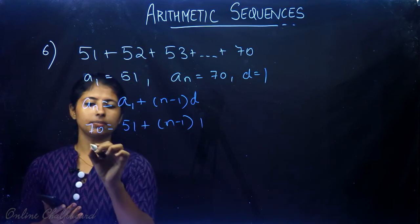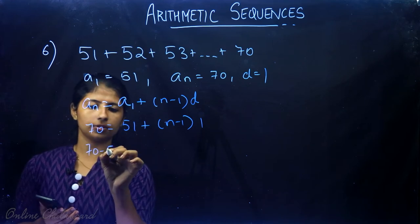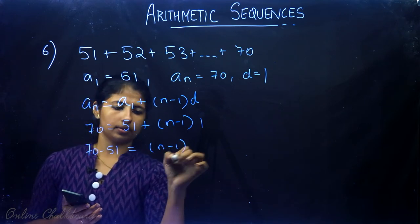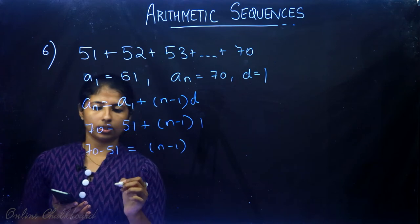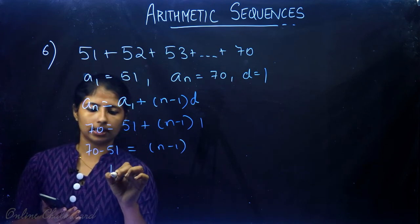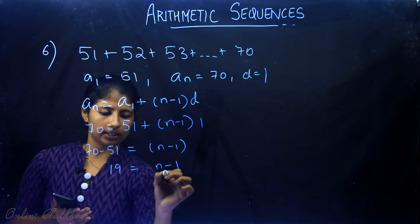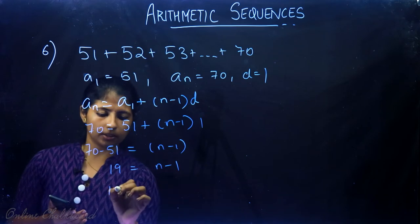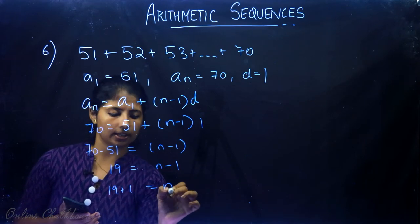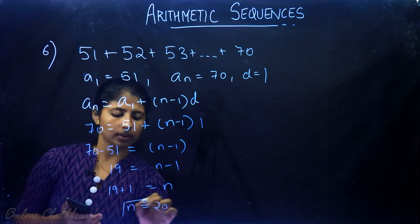Solving for n: 70 minus 51 equals n minus 1, which gives 19 equals n minus 1, so n equals 20. We have 20 terms in this sequence.